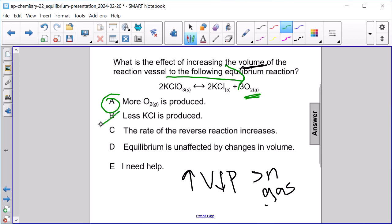So less KCl is produced. No, that's a product. The rate of the reverse reaction increases. No, it's the rate of the forward reaction. And we know the equilibrium is affected. It's not D either. So the answer here is A.